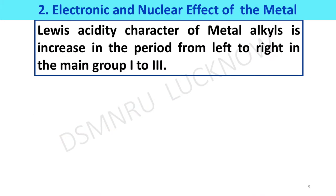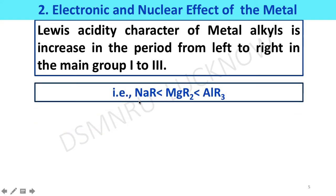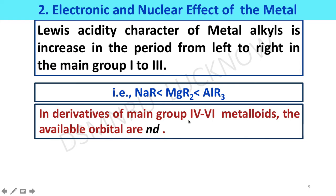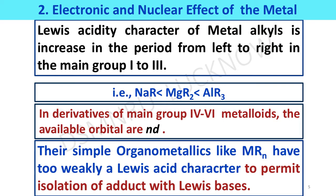Lewis acid character of metal alkyls increases across the period from left to right in main groups 1 to 3. For example, sodium alkyl has less acid character than magnesium dialkyl, and magnesium dialkyl has less acid character than alkyl aluminum. Trialkyl aluminum will be highly acidic in nature. In the case of transition metals, the back-end orbitals are d-orbitals, so organometallic derivatives of transition metals are weak Lewis acids and can also form adducts with Lewis bases.